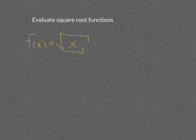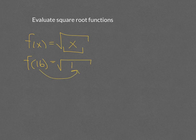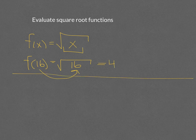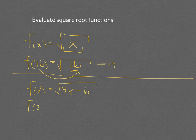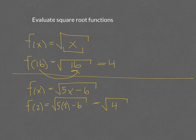We can evaluate square roots by plugging in values. For f(16), we plug 16 in for x and the square root of 16 is 4. For a harder function like f(x) equals the square root of 5x minus 6, finding f(2) means plugging in 2: 5 times 2 minus 6 gives the square root of 10 minus 6, which is the square root of 4, so that equals 2.